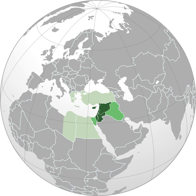The term entered English in the late 15th century from French. It derives from the Italian Levante, meaning "rising," implying the rising of the sun in the east, and is broadly equivalent to the Arabic term al-Mashrik, meaning "the east, where the sun rises."